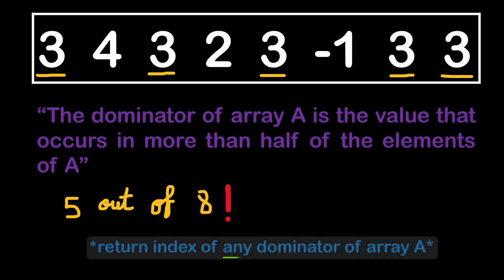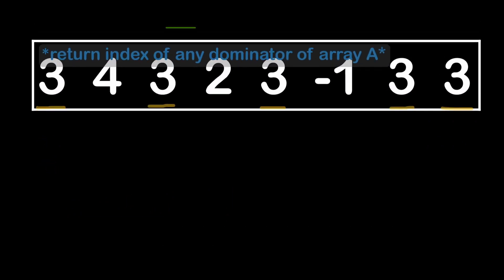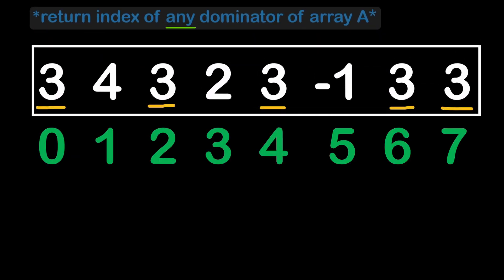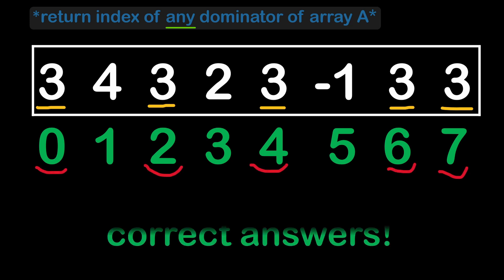Be careful to read the problem description carefully. We should be returning the index of any of the dominator's occurrences and not the number itself. In other words, if these are the indexes of the elements of the array and we have identified the indexes of the dominator's numbers, then returning any of these indexes would provide the correct answer.